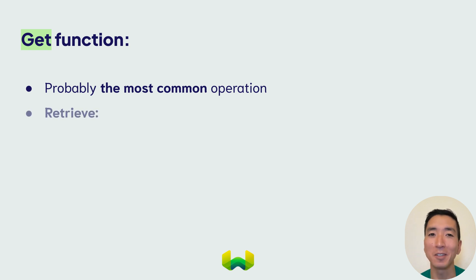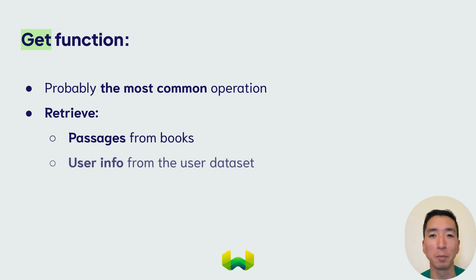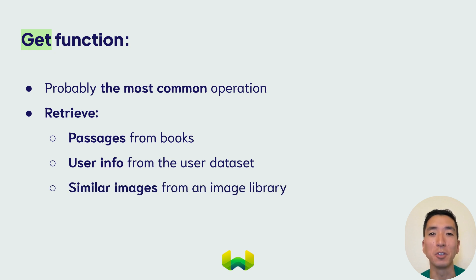For instance, you might want to find relevant passages from a collection of books, retrieve information on a particular type of users, or even images most similar to another image. In Weaviate, you use the get function to do all of those things.